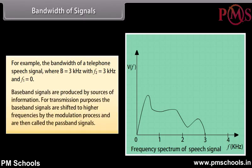Base band signals are produced by sources of information. For transmission purposes, the base band signals are shifted to higher frequencies by the modulation process and are then called pass band signals.